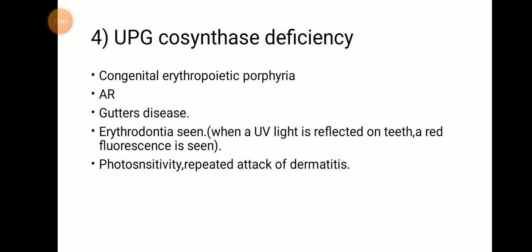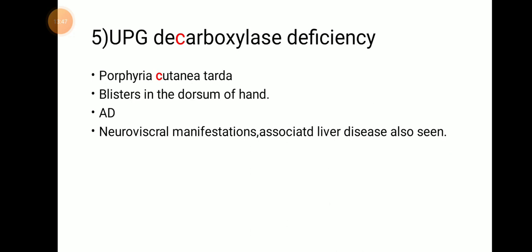The next step: UPG3 by UPG decarboxylase forms CPG3. UPG decarboxylase deficiency leads to porphyria cutanea tarda (PCT) — remembered by the 'C' in both UPG deCarboxylase and Cutanea. The main sign of porphyria cutanea tarda is blisters on the dorsum of the hand. This shows autosomal dominant inheritance, and neurovisceral manifestation with associated liver disease is also seen.